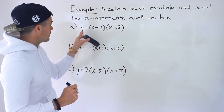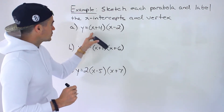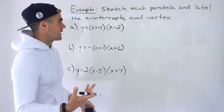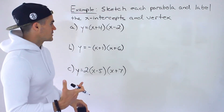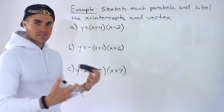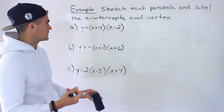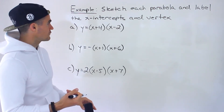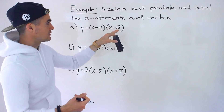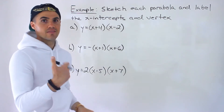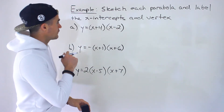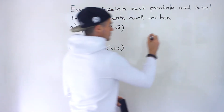Starting with part a, we have y equals x plus 4 in brackets times x minus 2. There's a specific process I go through to graph these. I first find the x-intercepts and the vertex, and then I graph it. So let's start off with finding the x-intercepts.